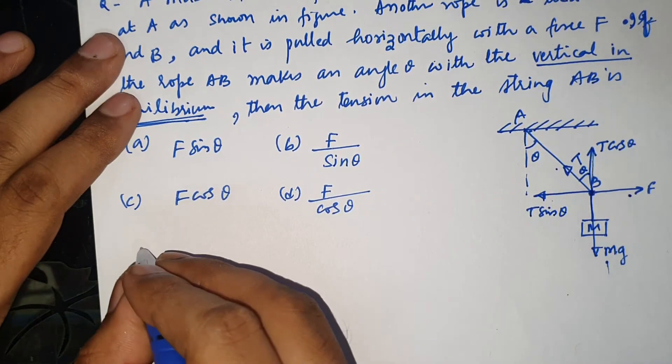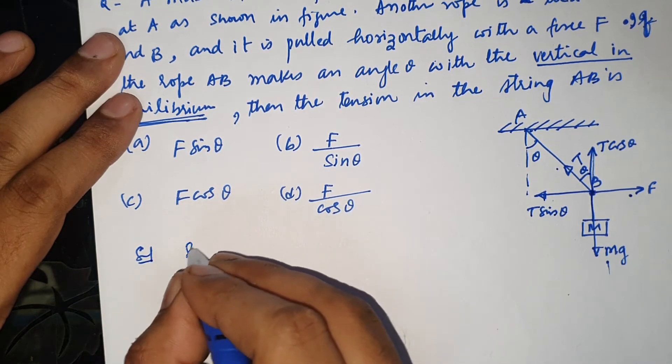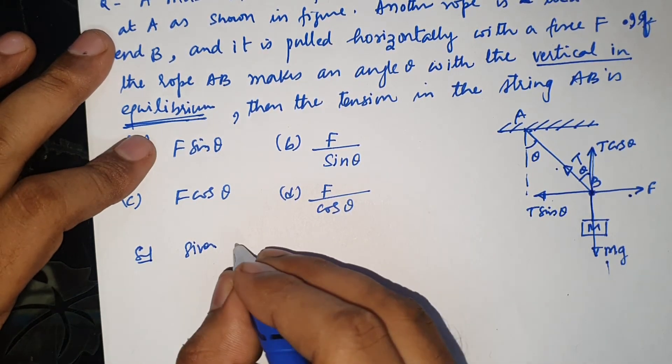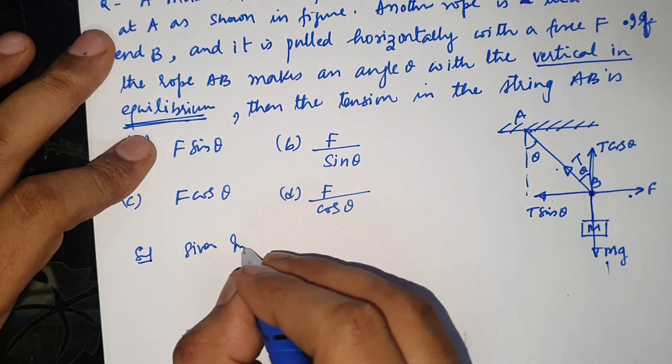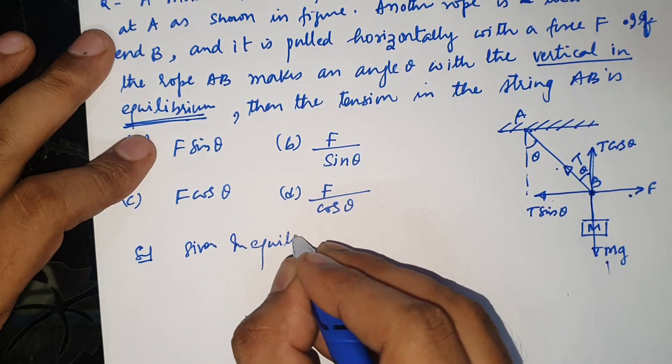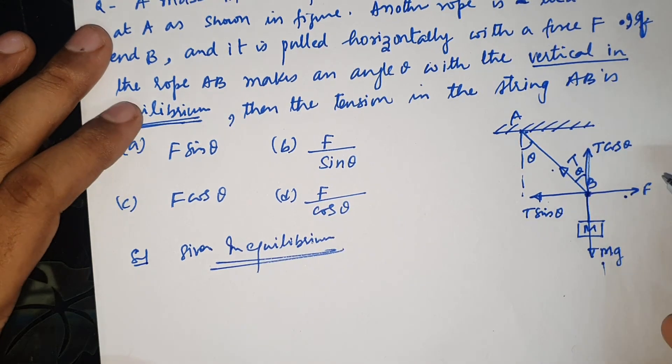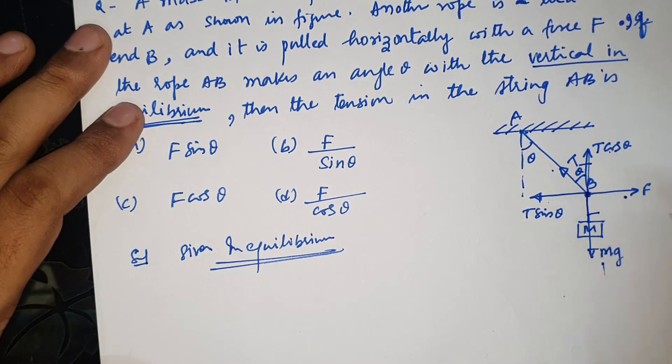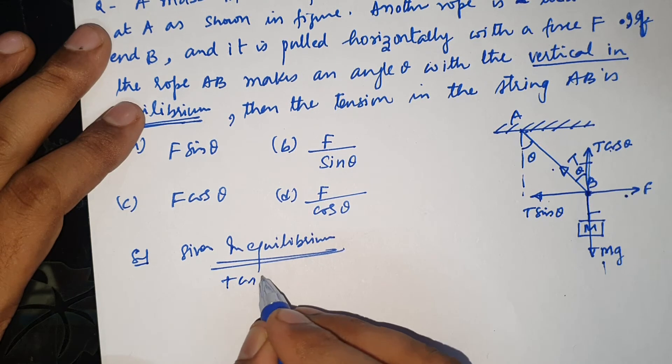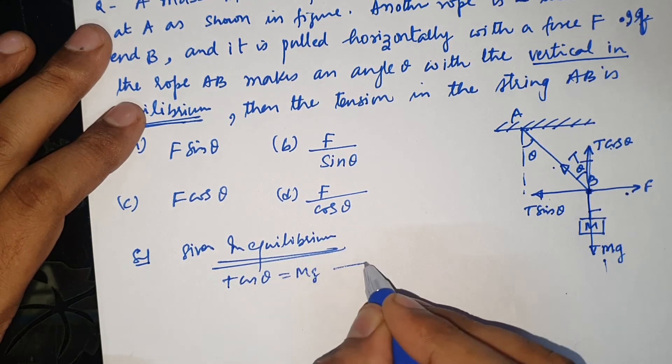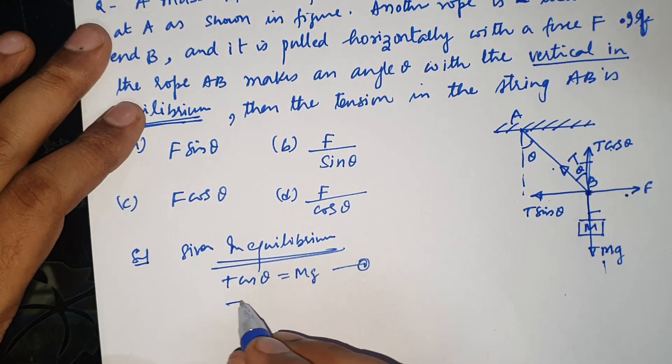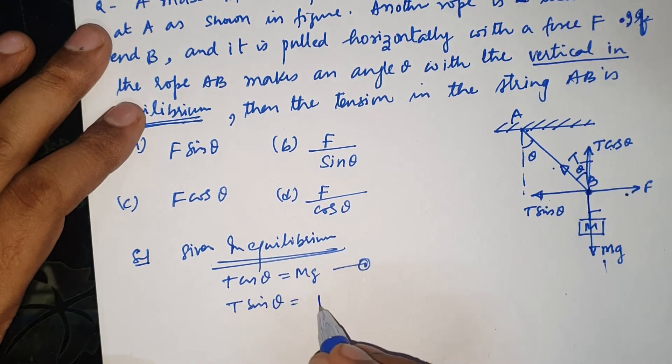Jaise ki question mein given hai ki vertical equilibrium, that means in equilibrium net force zero hote hai. Toh isko balance kar lega: T cos theta is equal to mg. Aur T sin theta isko balance kar lega: T sin theta is equal to F.